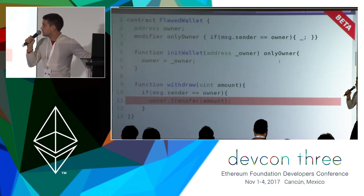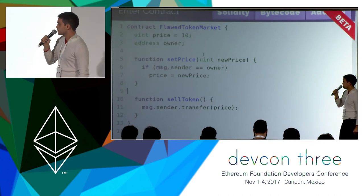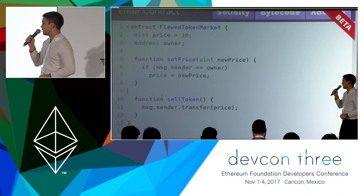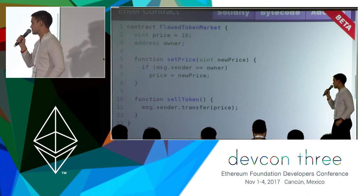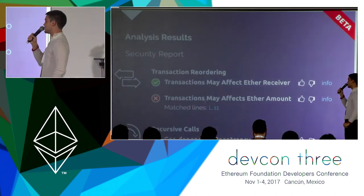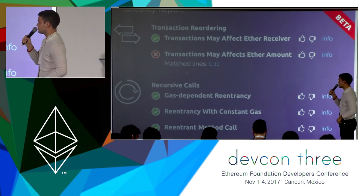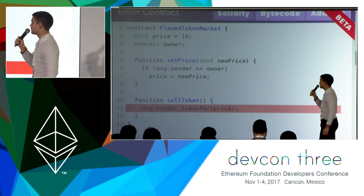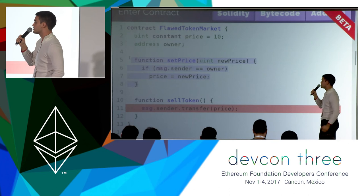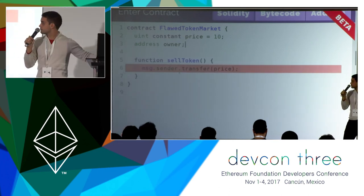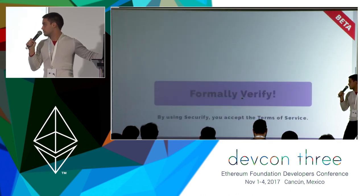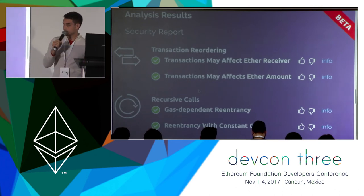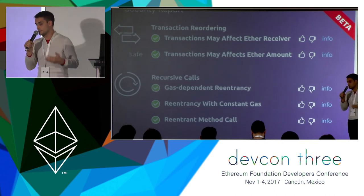One last example is the token with a changing price — the transaction reordering example shown earlier. There is a set price function through which the owner can change the price, and a sell token function for users. Clicking Formally Verify shows that the transaction may affect the Ether amount — a case of transaction reordering because the amount sent depends on a variable that is not constant. A quick fix is to make the price constant and remove the ability to change it in the future. Clicking Formally Verify again confirms the pattern is resolved, though of course this removes the feature of changing the price, so more work is needed to retain that feature.